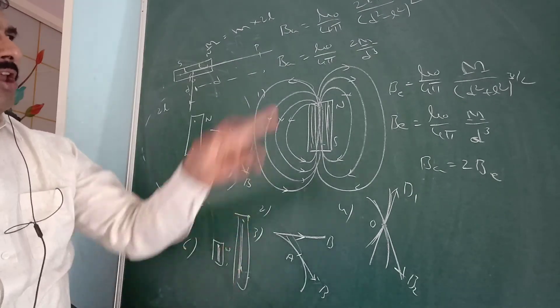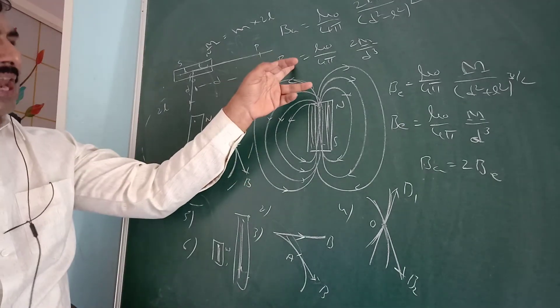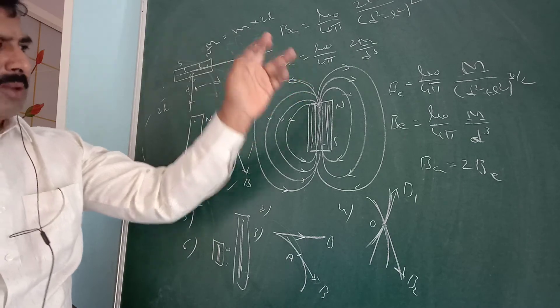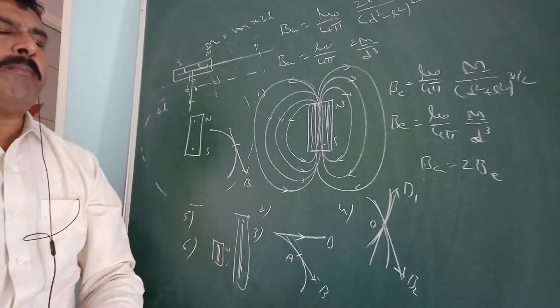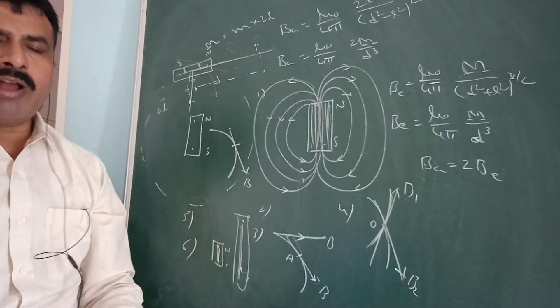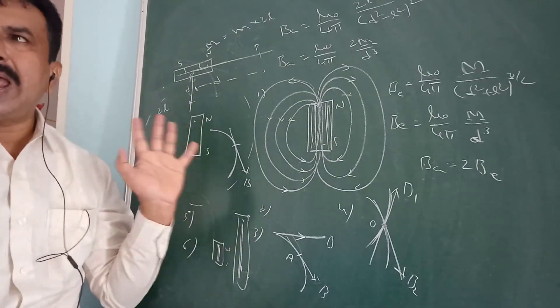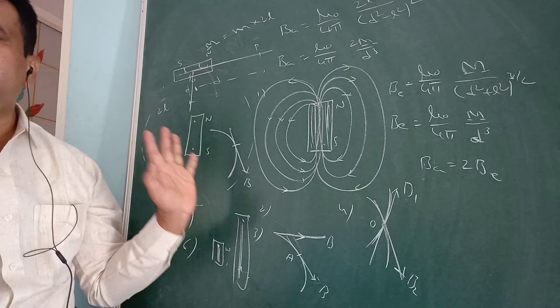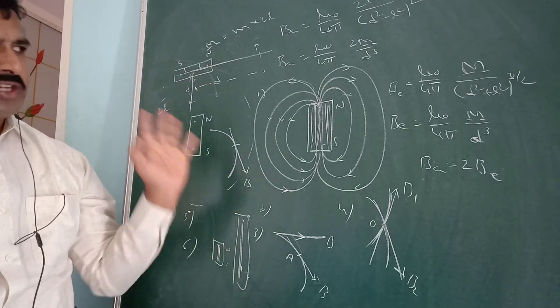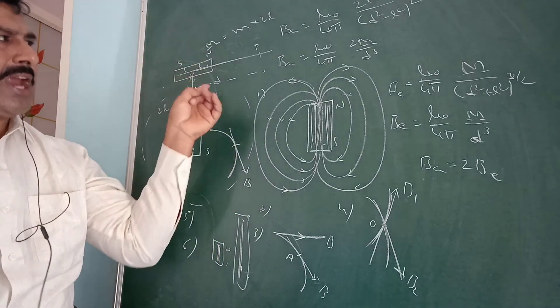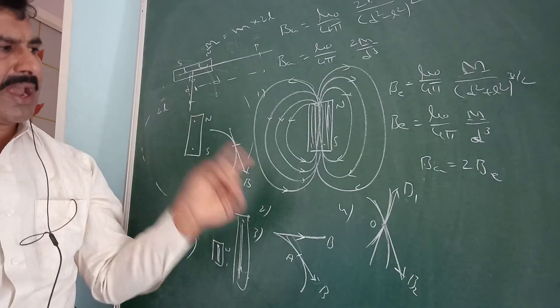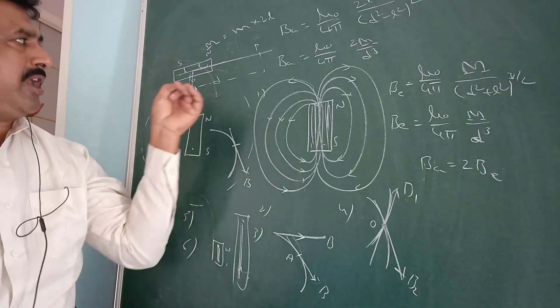The magnetic field along the axial line of the magnet is twice the magnetic field along the equatorial line at the same distance D.